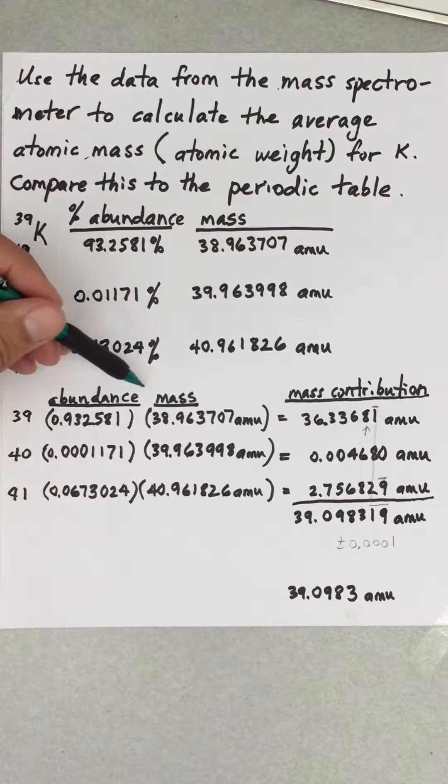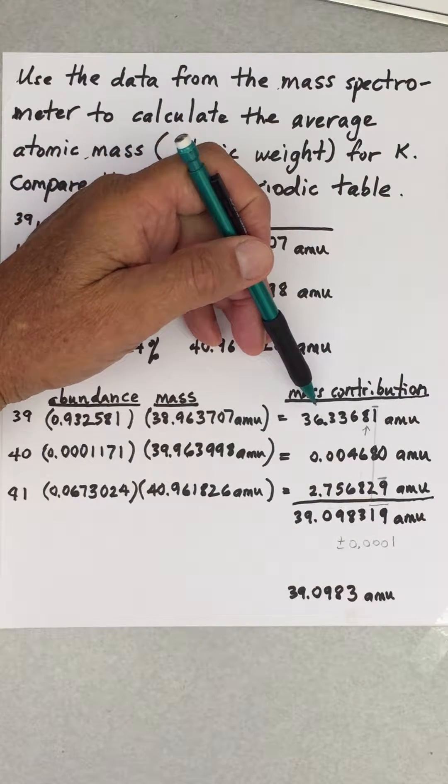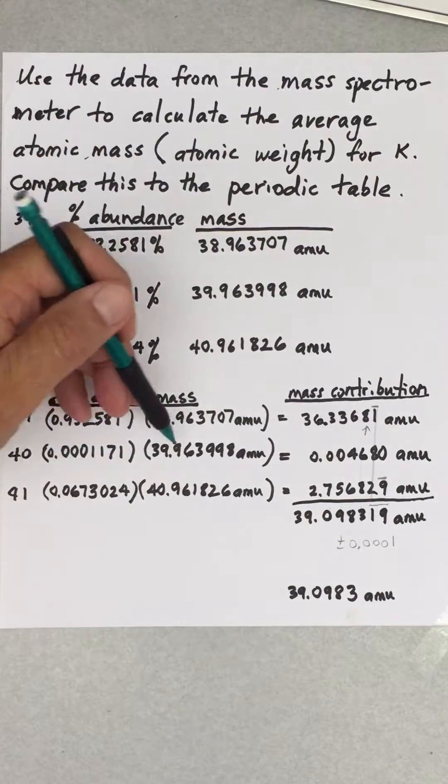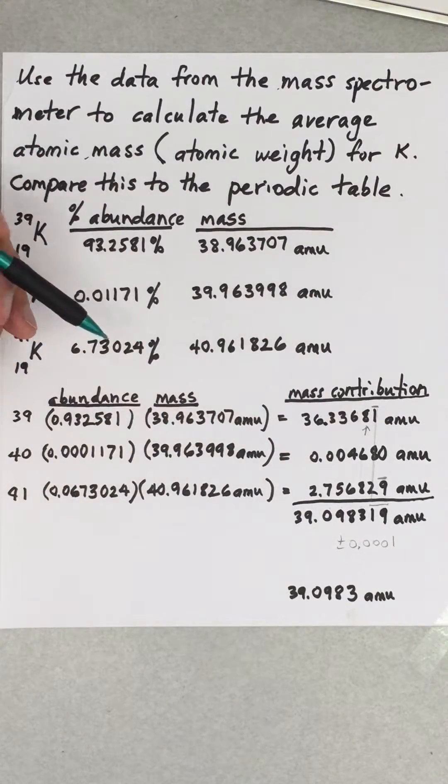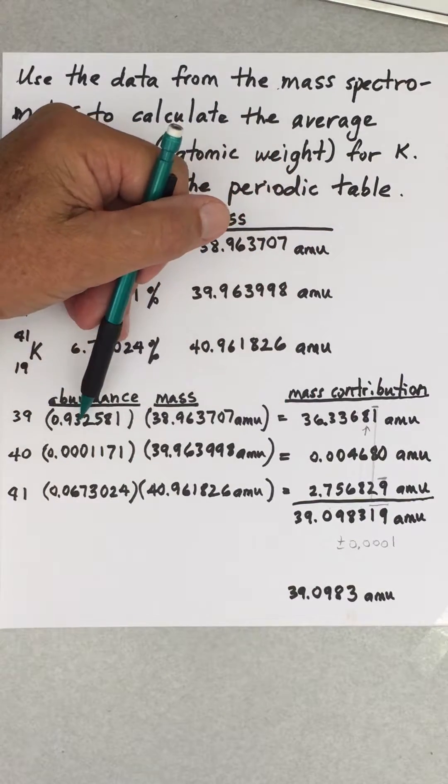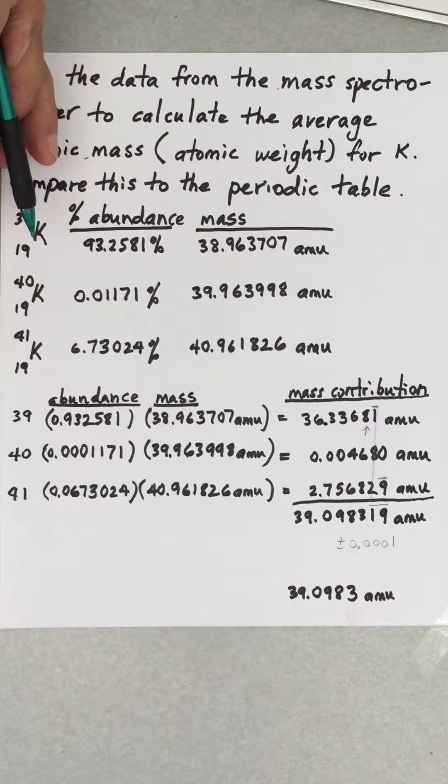I'm going to take that abundance, multiply it by its mass and I'm going to get what's called the mass contribution. So I did that for all the different data that I have, all three isotopes. And you can see that the largest contribution by far is going to come from potassium 39 because that's the most abundant isotope.